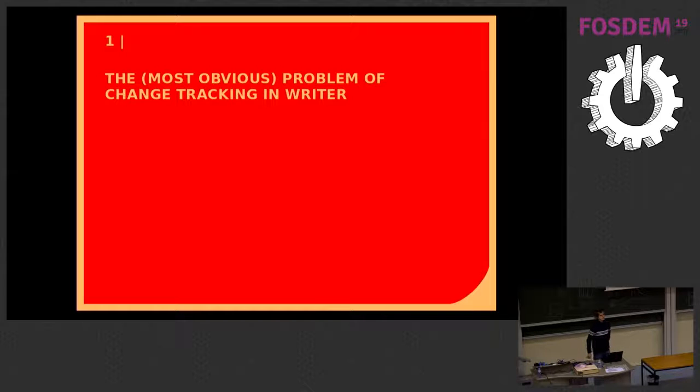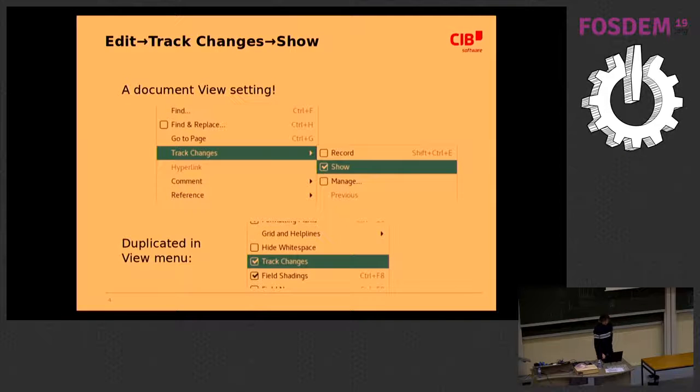Change tracking in Writer doesn't have only one problem. This is just the most obvious problem. Unfortunately, the other problems will still remain. In the menu, we have this setting where the user can set track changes to either be visible or hidden. It's such a popular setting that we even have it twice in the menu.